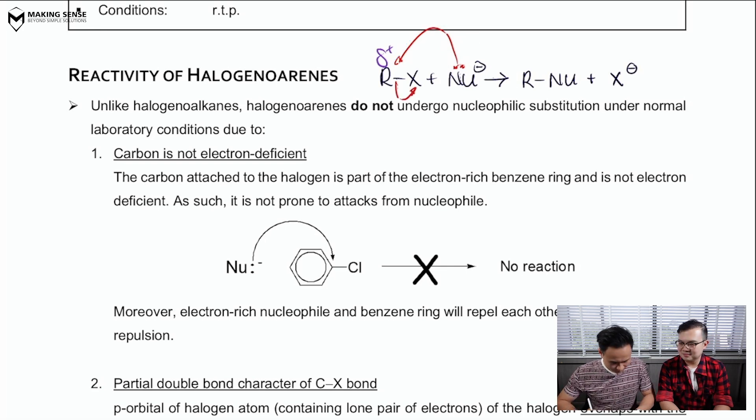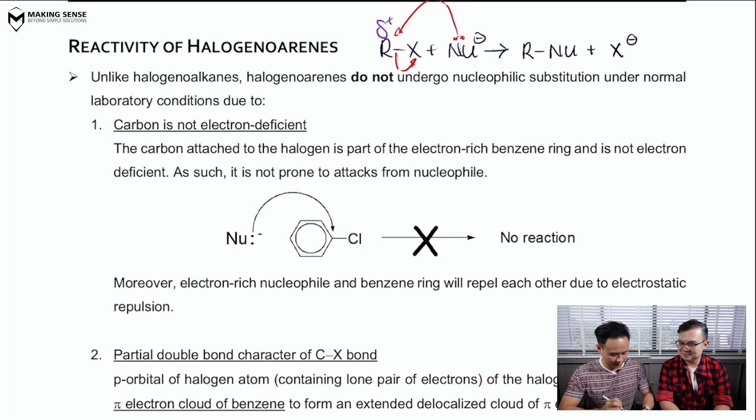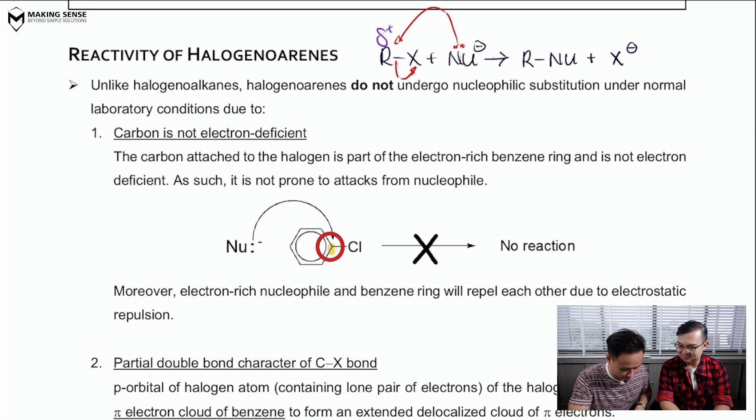Now, Mr. Leong, do you think I can say the same thing about the carbon attached directly to the halogen? Can I say that it's electrophilic? That's a good question. So, you notice that this carbon that you've highlighted is part of a benzene ring.